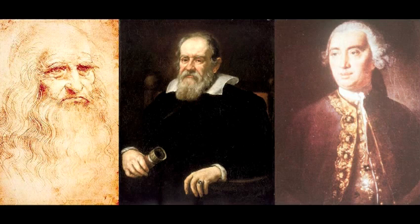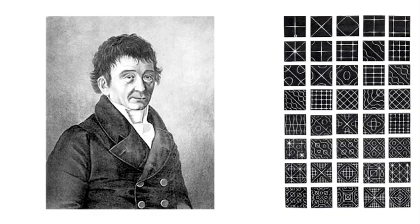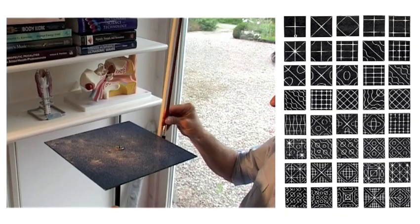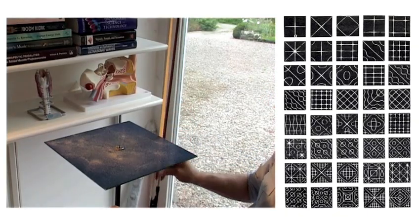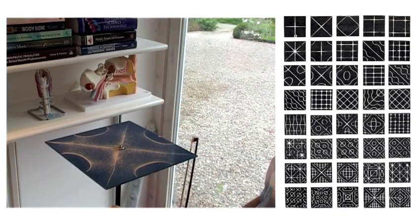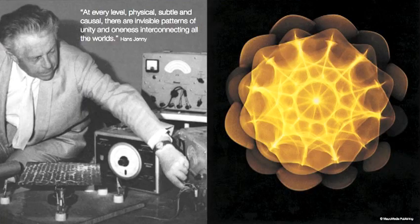If we have a quick look at the history of cymatics, beginning with the observations of resonance by da Vinci, Galileo, the English scientist Robert Hooke, and then Ernest Chladni — he created an experiment using a metal plate, covering it with sand, and then bowing it to create the Chladni patterns that you see here on the right.